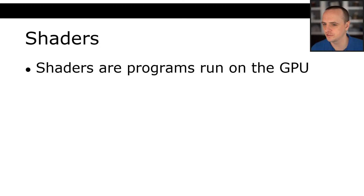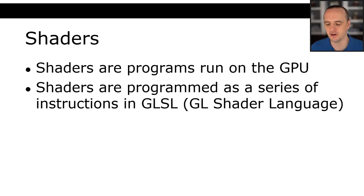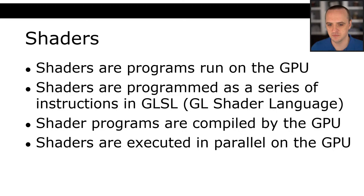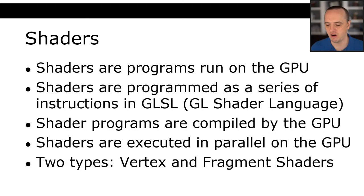Shaders are programs that are run on the GPU in parallel. Shaders are programmed as a series of instructions in the GL Shader Language. GLSL is the language that they are programmed in. GLSL is very similar to C, and so we've seen a lot of code that looks a lot like GLSL. Shader programs are compiled by the GPU and executed in parallel. There are two types of shader: vertex shaders and fragment shaders. Vertex shaders are run on the vertices of things, and fragment shaders are run per pixel.